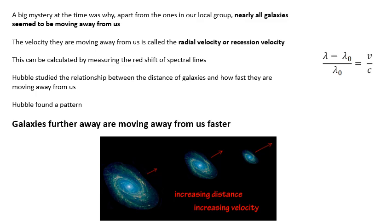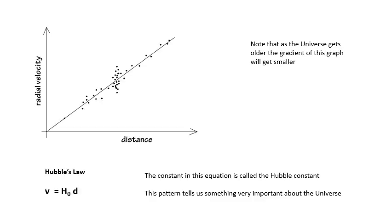What Hubble did was he studied the relationship between the distance, how far away they were, and how fast they were moving away from us. He found a pattern. He found that galaxies further away are moving away from us faster. This is Hubble's graph, a graph of recession velocity against distance. The recession velocity you get from redshift, and distance you get from standard candles. The recession velocity is proportional to how far away these galaxies are.